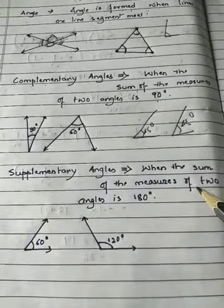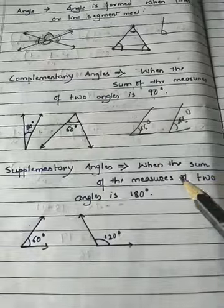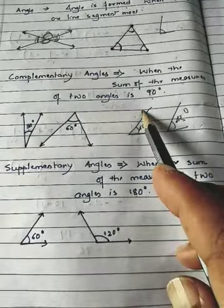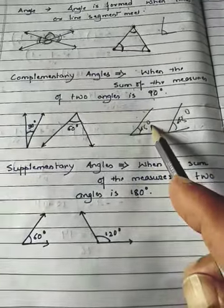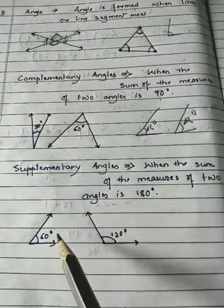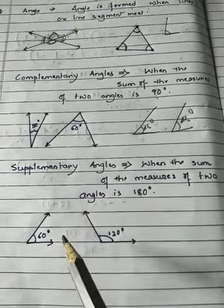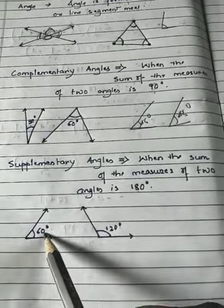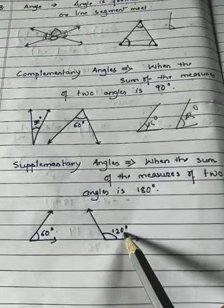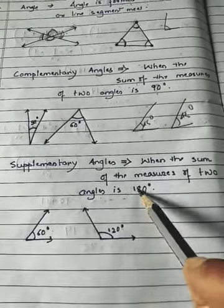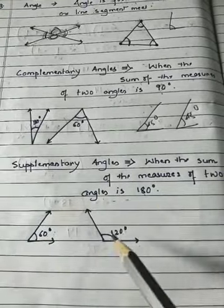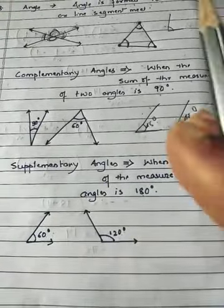Number five: Supplementary Angle. When the sum of the measures of two angles is 180 degrees, they are called supplementary angles. Complementary angles sum to 90 degrees, while supplementary angles sum to 180 degrees. For example, one angle of 60 degrees and another of 120 degrees — adding these gives 180 degrees, so they are supplementary angles.